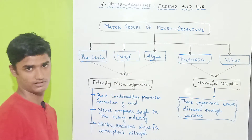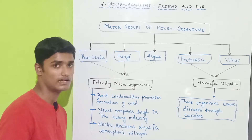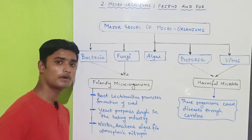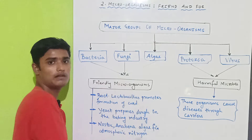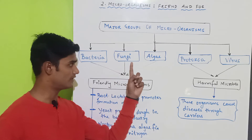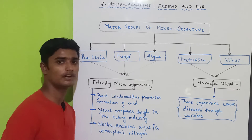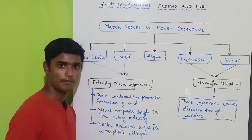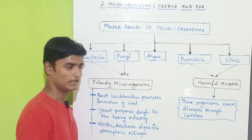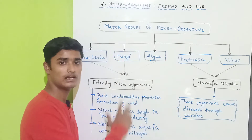In these five categories, most of the bacteria, fungi, and algae are actually helpful or friendly microorganisms to us, because they generally help us. That is the reason they are called friendly microorganisms. Not every bacterium is useful for us, but most of the bacteria, fungi, and algae are generally helpful. So in our book, they are listed as friendly microorganisms.